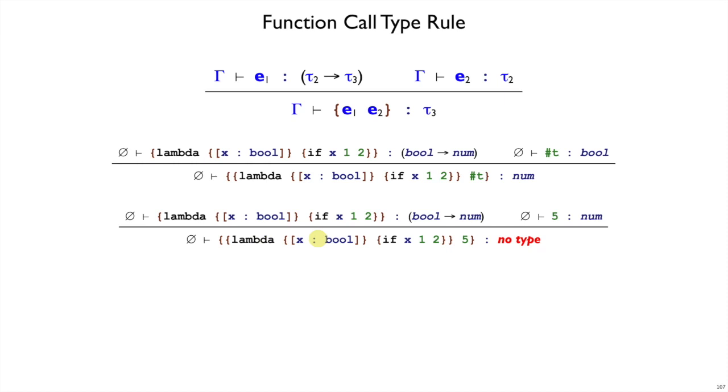On the other hand, when we use this variant where we replace true by 5, 5 has type num. This num as tau2 does not match this bool as tau2, so it's not matching the pattern, so we have no type.